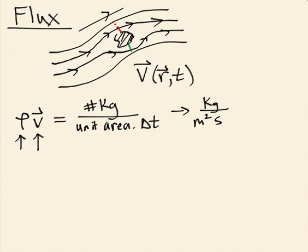If I know the speed of the fluid, that doesn't help me. I need to know how much gets diverted to the red surface and how much to the green surface. So knowing the direction of the velocity is also important. Now, ρ times V is a local per-unit-area amount of mass that flows, so I need to consider an area to answer how much mass per unit time. The area I'm considering will be the area of these two imaginary surfaces immersed in the fluid — I want to count how many kilograms cross that surface. So I need to at least multiply by an area.